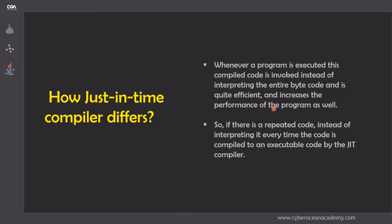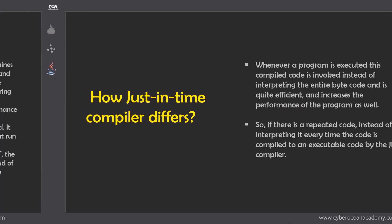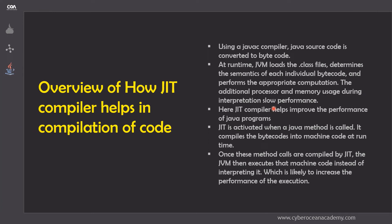Now let's summarize the whole functionality of a just-in-time compiler and take an overview of how the JIT compiler helps in compilation. We start from the very beginning: we have our Java program — that is our source code — and the javac compiler compiles it into bytecode, an intermediate code. This is a set of instructions understood only by the JVM, and at runtime the JVM loads the dot class file — that is our bytecode — and determines the semantics of each individual bytecode and performs the appropriate computation.